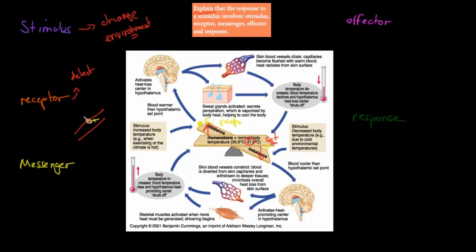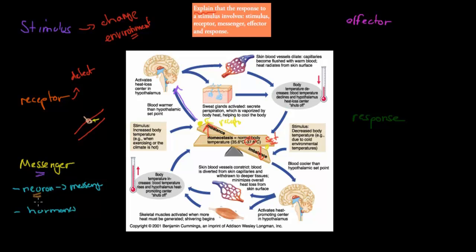Messengers are usually neurons — messenger neurons. Sometimes they can also be hormones, but we're going to cover mostly neuron messengers here. Once we've detected the change via receptors, we send the signal on through these neurons. These neurons are our messengers — they bring the message from one place to the next. The hypothalamus shown in this diagram is the control center, which is not in the dot point.